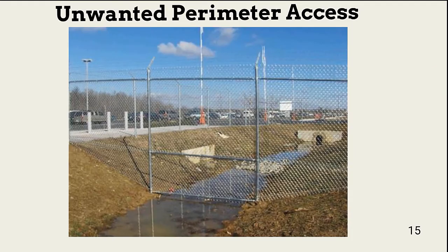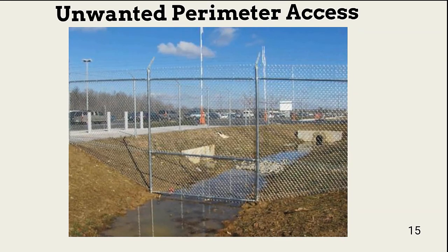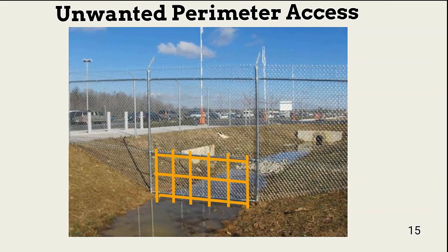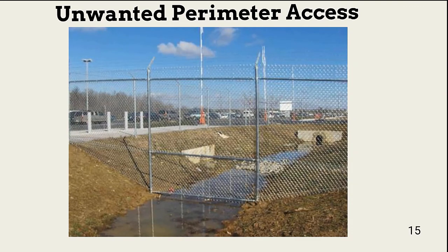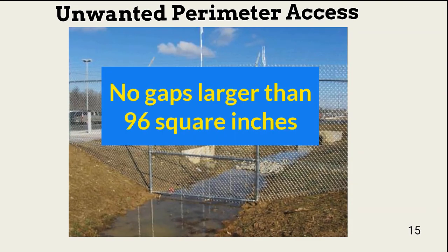When designing and maintaining a perimeter barrier, unwanted access points, or UAPs, must be managed. One example of a UAP is a depression, such as one caused by a drainage ditch. The solution shown is likely okay for moderate security, but a determined attacker would likely go under the additional fencing. If high security is needed, a grate securely attached to the fencing and planted deep into the ditch would be a better solution. In general, no gap should exist in the perimeter barrier, or any barrier, that exceeds 96 square inches.